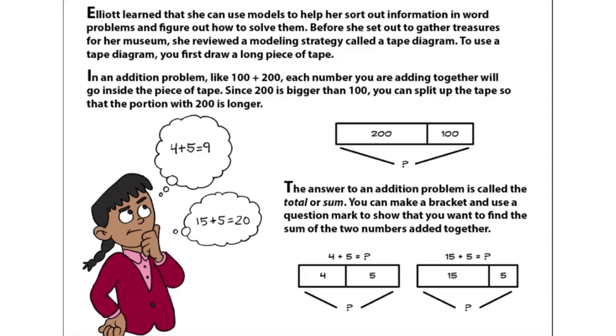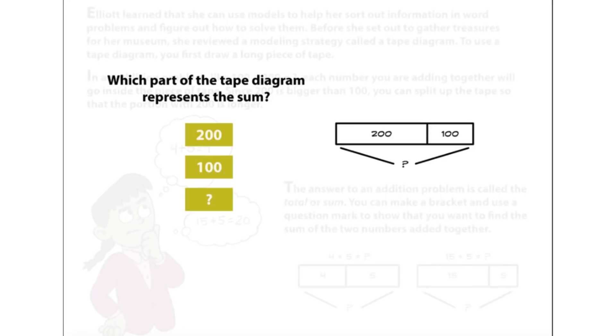In an addition problem like 100 plus 200, each number you are adding together will go inside the piece of tape. Since 200 is bigger than 100, you can split up the tape so that the portion with 200 is longer. The answer to an addition problem is called the total, or sum. You can make a bracket and use a question mark to show that you want to find the sum of the two numbers added together. Which part of the tape diagram represents the sum?